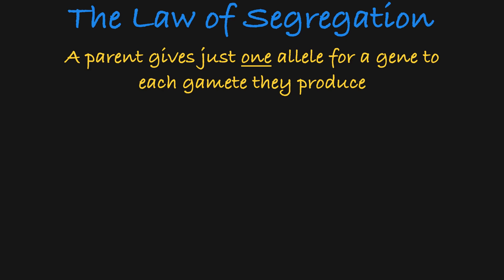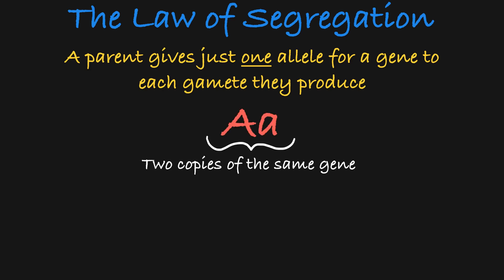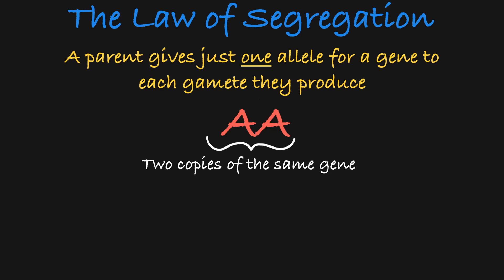An organism has two copies of each gene. The different versions of these copies are called alleles. The organism could be homozygous, carrying two of the same allele for a gene, or heterozygous, carrying two different alleles for that gene.